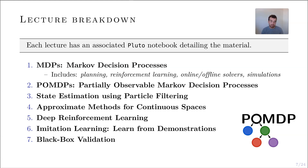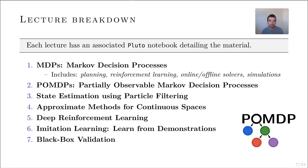Next we'll talk about state estimation and use the particle filtering package. For the fourth lecture, we'll switch over to continuous spaces — most of what I cover prior will be discrete spaces — and this is how you approximate an infinite space using discretization to solve the mountain car problem. Lecture five dives into deep reinforcement learning, using cutting-edge algorithms to solve the pendulum swing-up problem. We'll also talk about imitation learning, again to solve the pendulum swing-up problem. And lastly, black box validation — how do you stress test a system that you can only give inputs to and receive outputs from. I hope you're just as excited as I am for the lectures to come. All of this code and slides will be available online on the Julia Academy GitHub. Thank you.